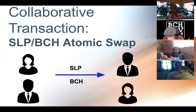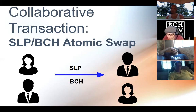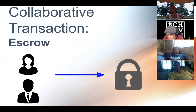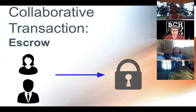Then you've got an SLP-BCH atomic swap. Alice and Bob pay Bob and Alice — Alice contributes SLP, Bob contributes BCH. Bob then receives the BCH from Alice, and Alice receives the SLP from Bob, all in one transaction. And then an escrow transaction: Alice and Bob pay into an escrow address where they'll receive funds based on something in the future — an Oracle with price data, an event, or a time lock.